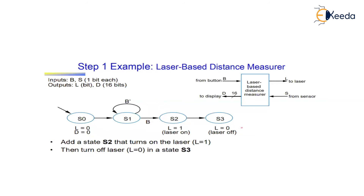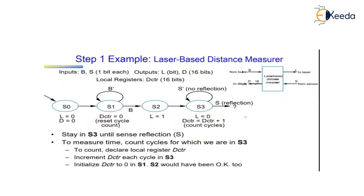After S2, we immediately move to S3. In S3, the laser is turned off (l = 0) — because leaving it on would cause the reflection timing to be incorrect. In S3 we wait for the reflection signal s. We count the cycles spent in S3 to measure time. To do this, we need to introduce a local register called d_counter.